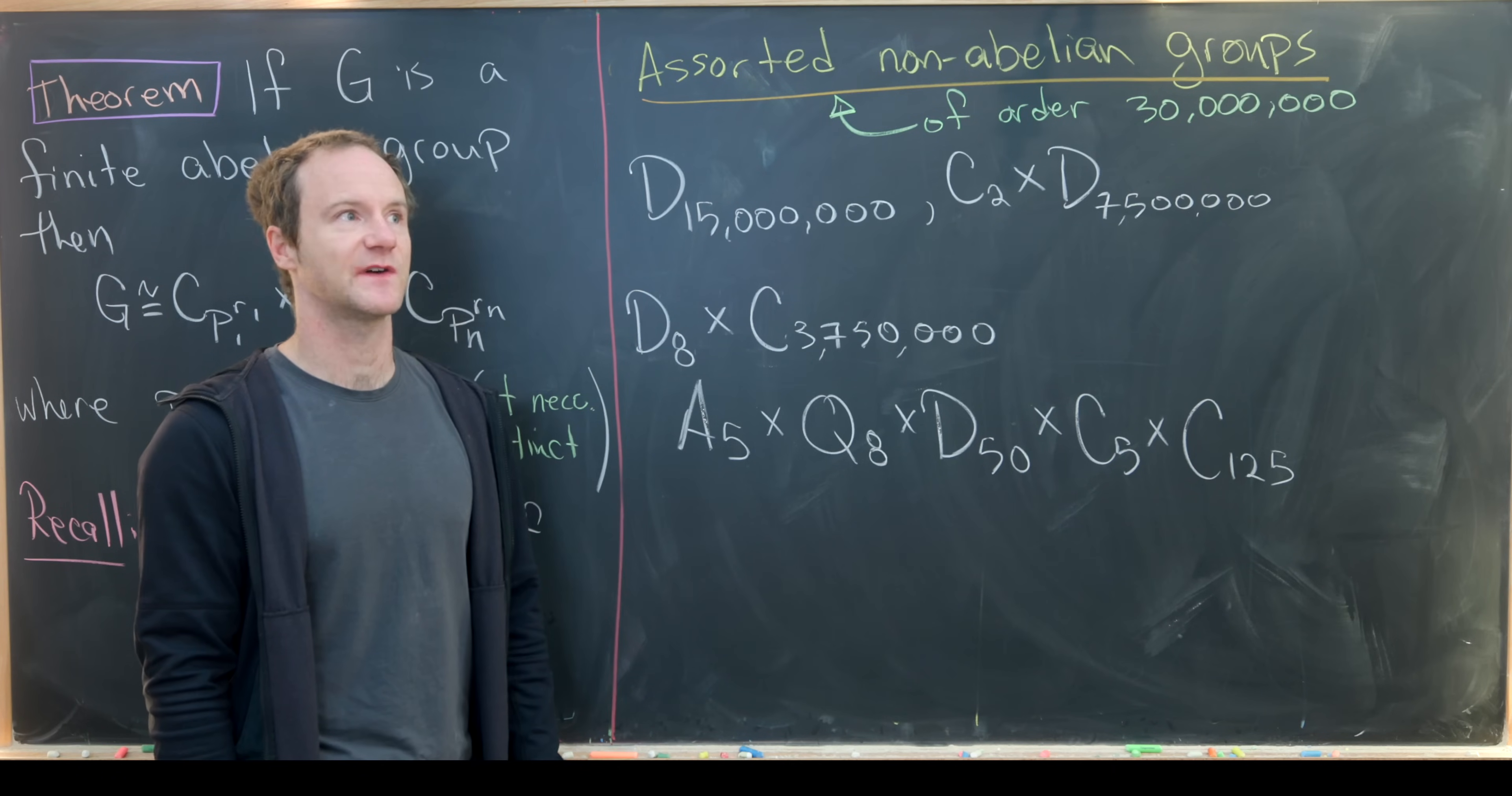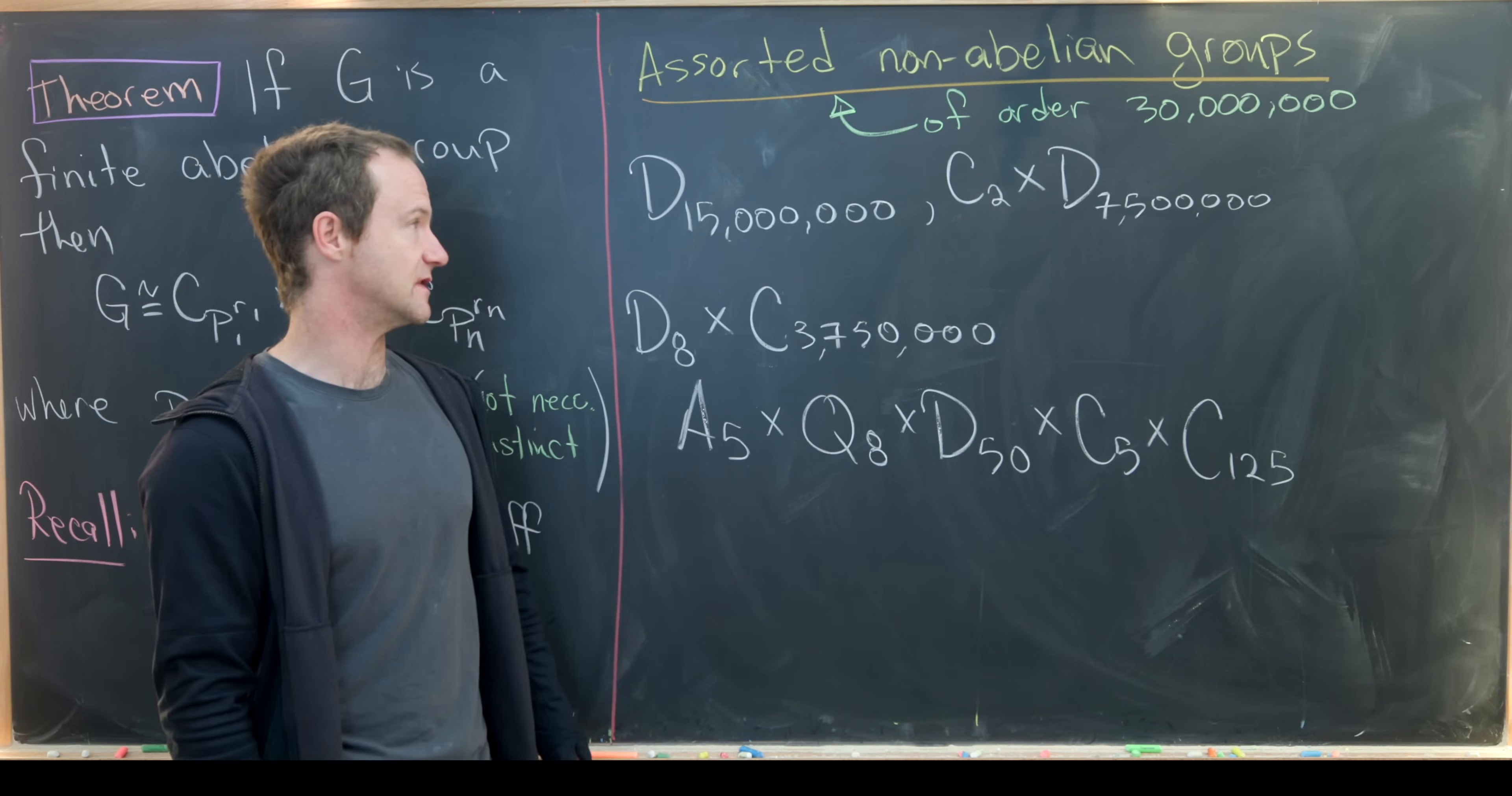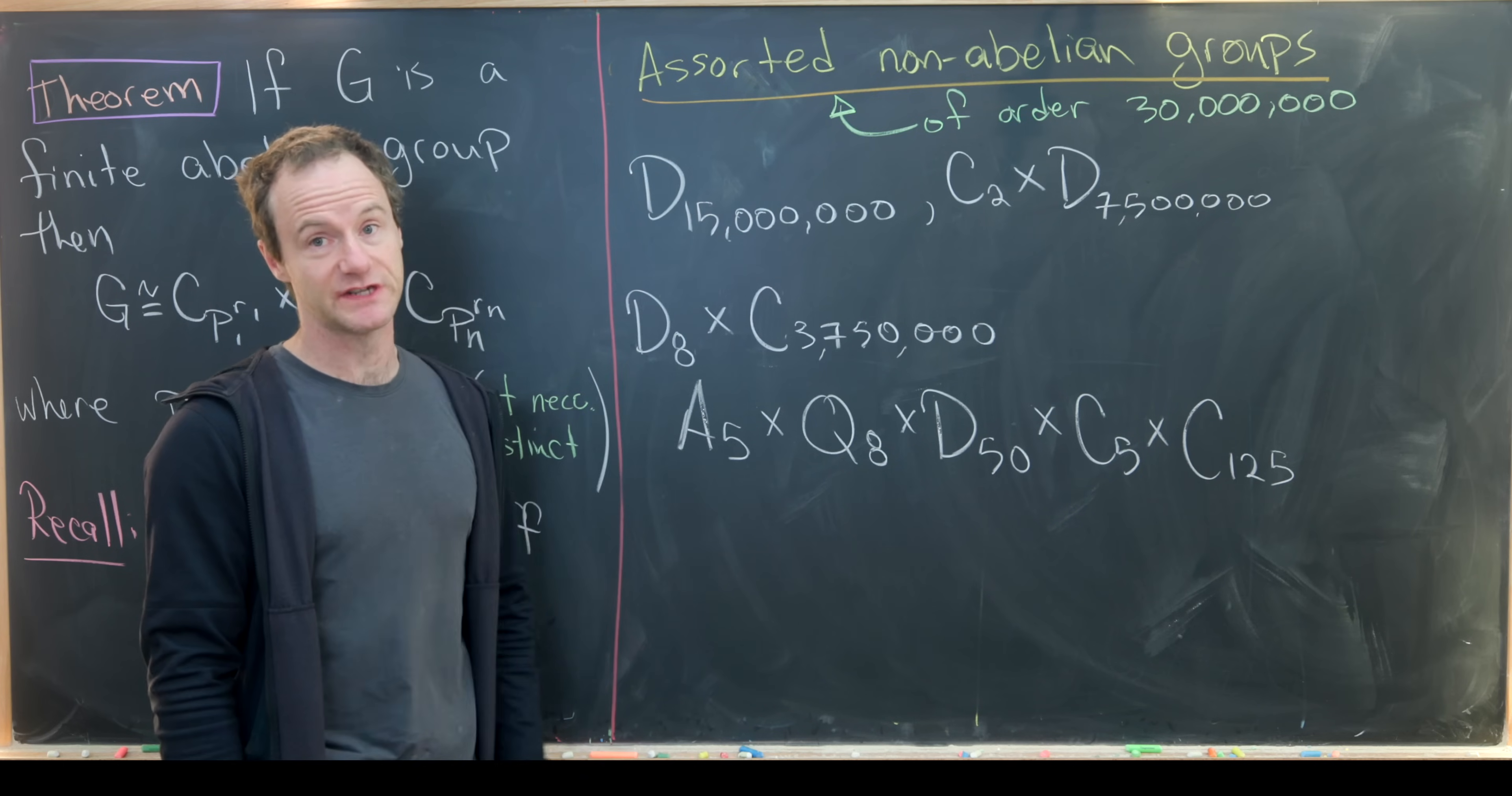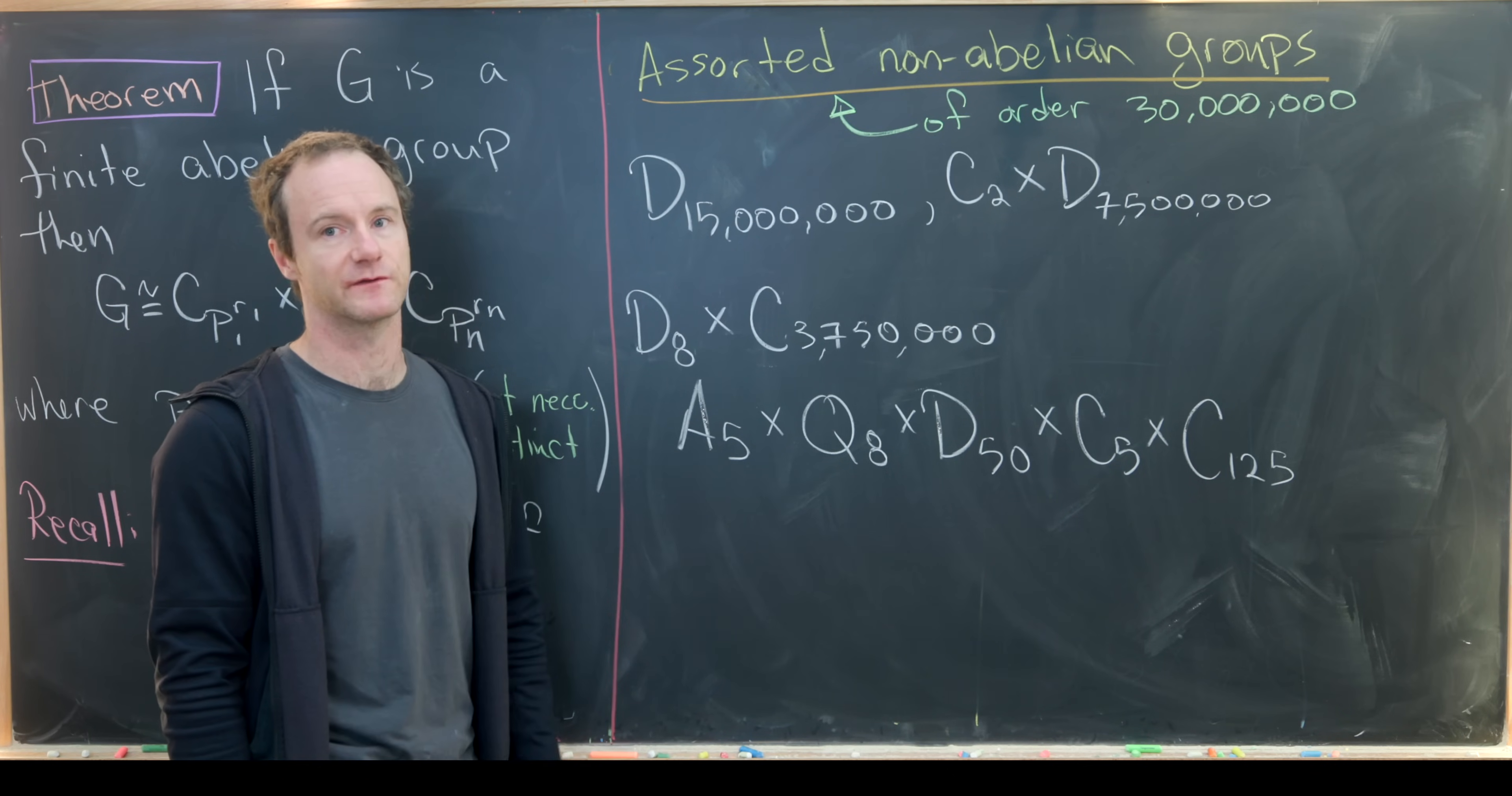So we just got done classifying all abelian groups of order 30 million. Now we're going to look at some assorted non-abelian groups of order 30 million. Like I said, it's unreasonable to totally classify these. So first off we've got the dihedral group 15 million. This is all reflectional and rotational symmetries of a 15 million gone. That's a polygon with 15 million sides. There are 15 million rotations and 15 million reflections.